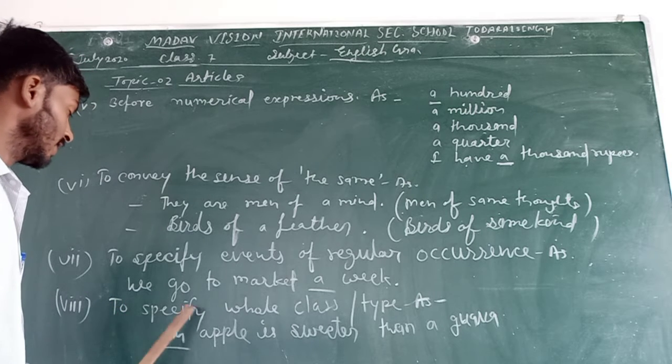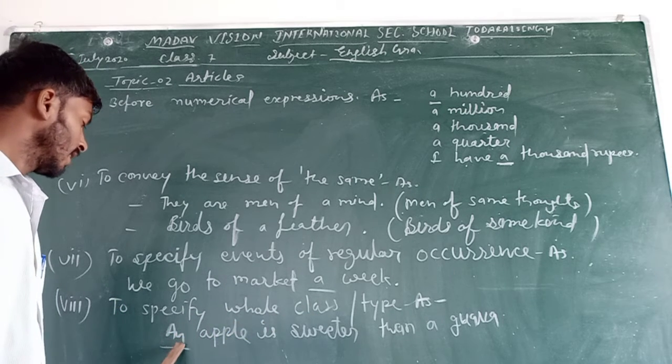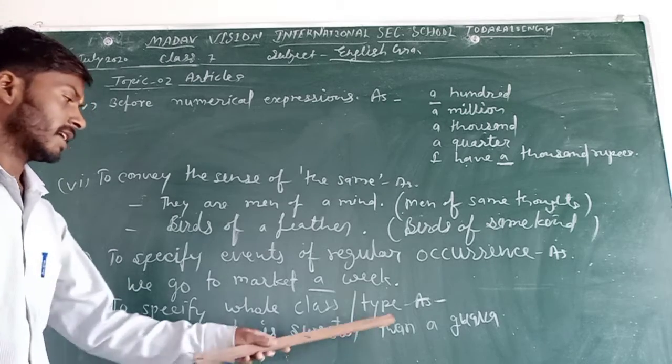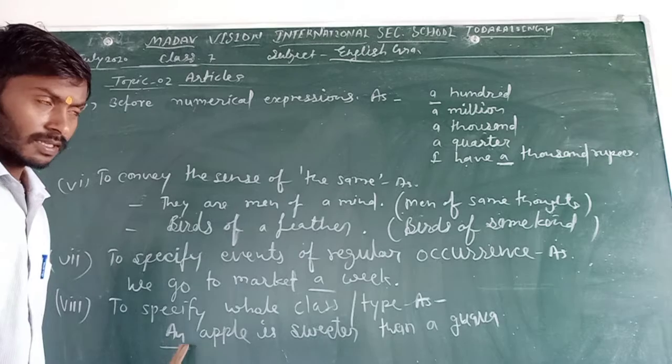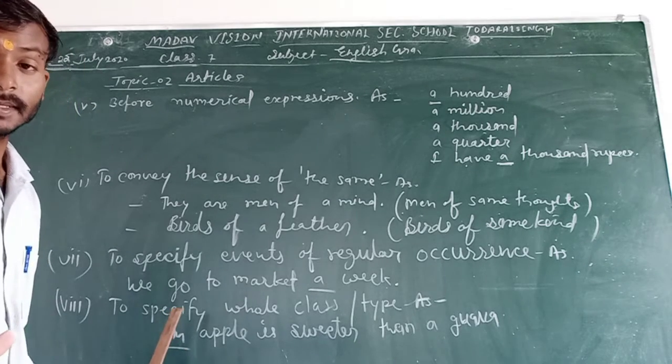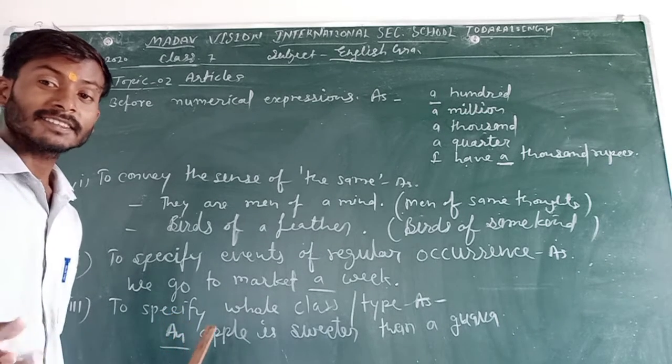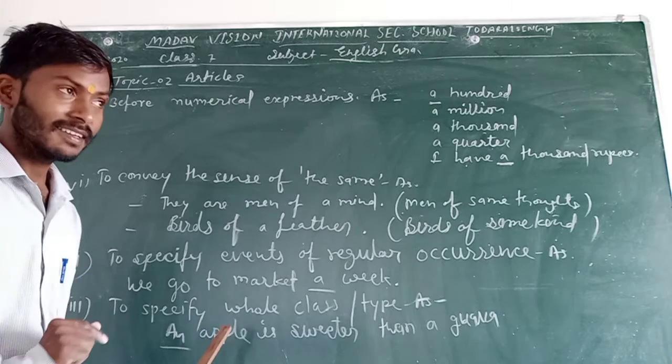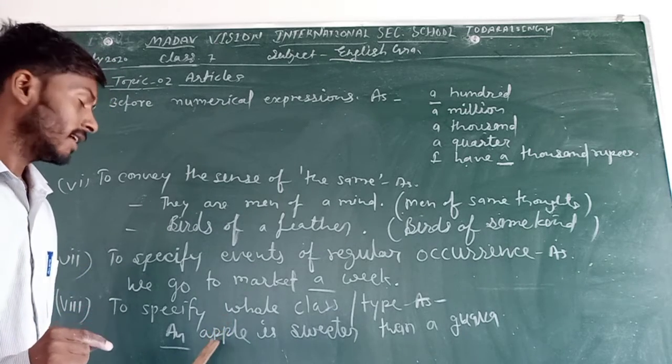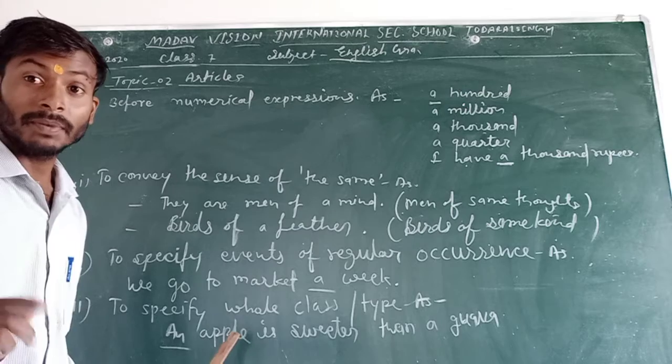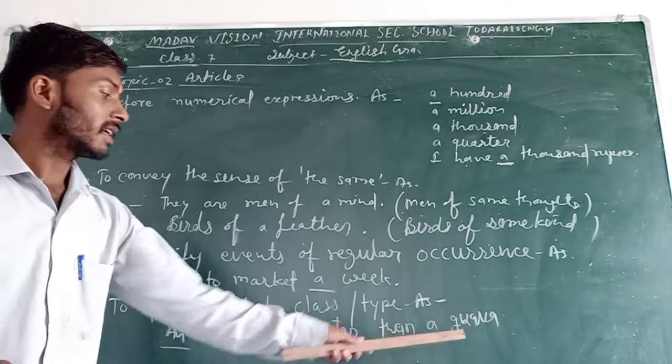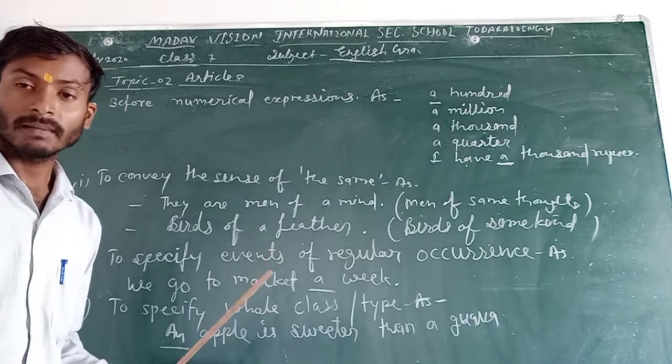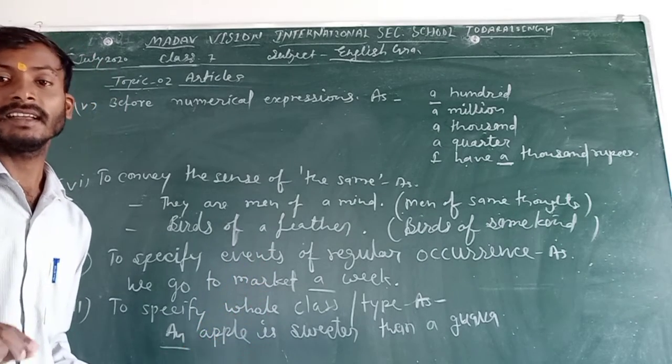To specify whole class and type. An apple is sweeter than guava. It means apples are sweeter than guava. Here, not an apple but the whole apples. Here guava, the whole guava, not a single guava.